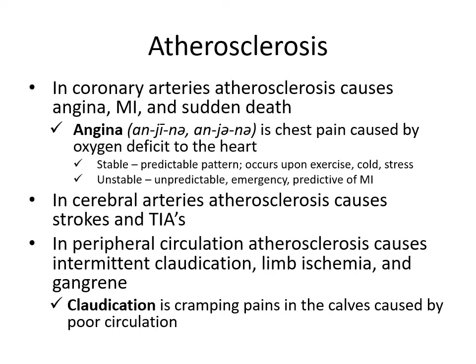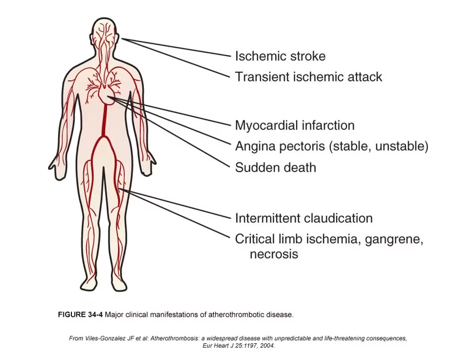In cerebral arteries, atherosclerosis causes strokes and TIAs. In peripheral circulation, atherosclerosis causes intermittent claudication, limb ischemia, and gangrene. Claudication is the fancy word for cramping in the calves caused by poor circulation. So we have ischemic strokes and transient ischemic attacks in the brain, MIs, angina pectoris, and sudden death. In the legs, we have intermittent claudication, critical limb ischemia, gangrene, and necrosis.